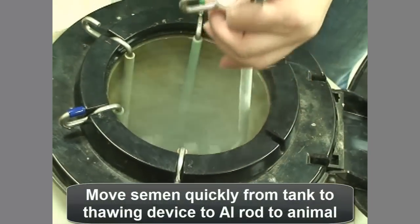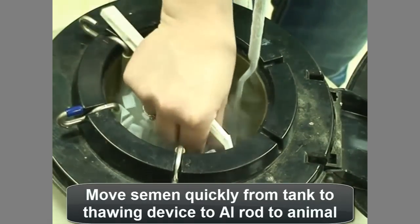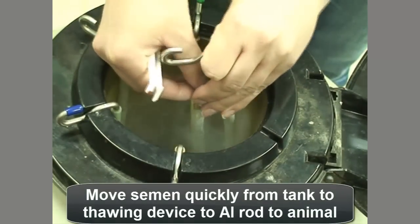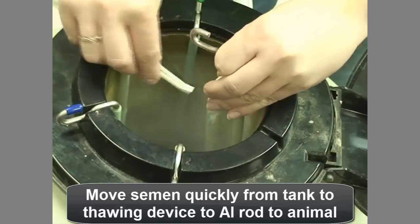Move the semen quickly from the semen tank to the thawing unit, from the thawing unit into the AI rod, and then into the animal to be inseminated.